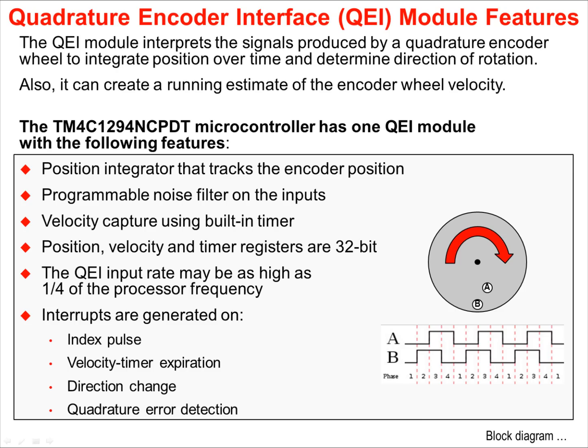Position, velocity, and timer registers are all 32 bits. The QEI input rate may be as high as one-fourth of the processor frequency, or as high as 30 MHz. Interrupts can be generated on an index pulse, a velocity timer expiration, a direction change, or a quadrature error detection. Quadrature encoding is often used on motors and conveyor belts.